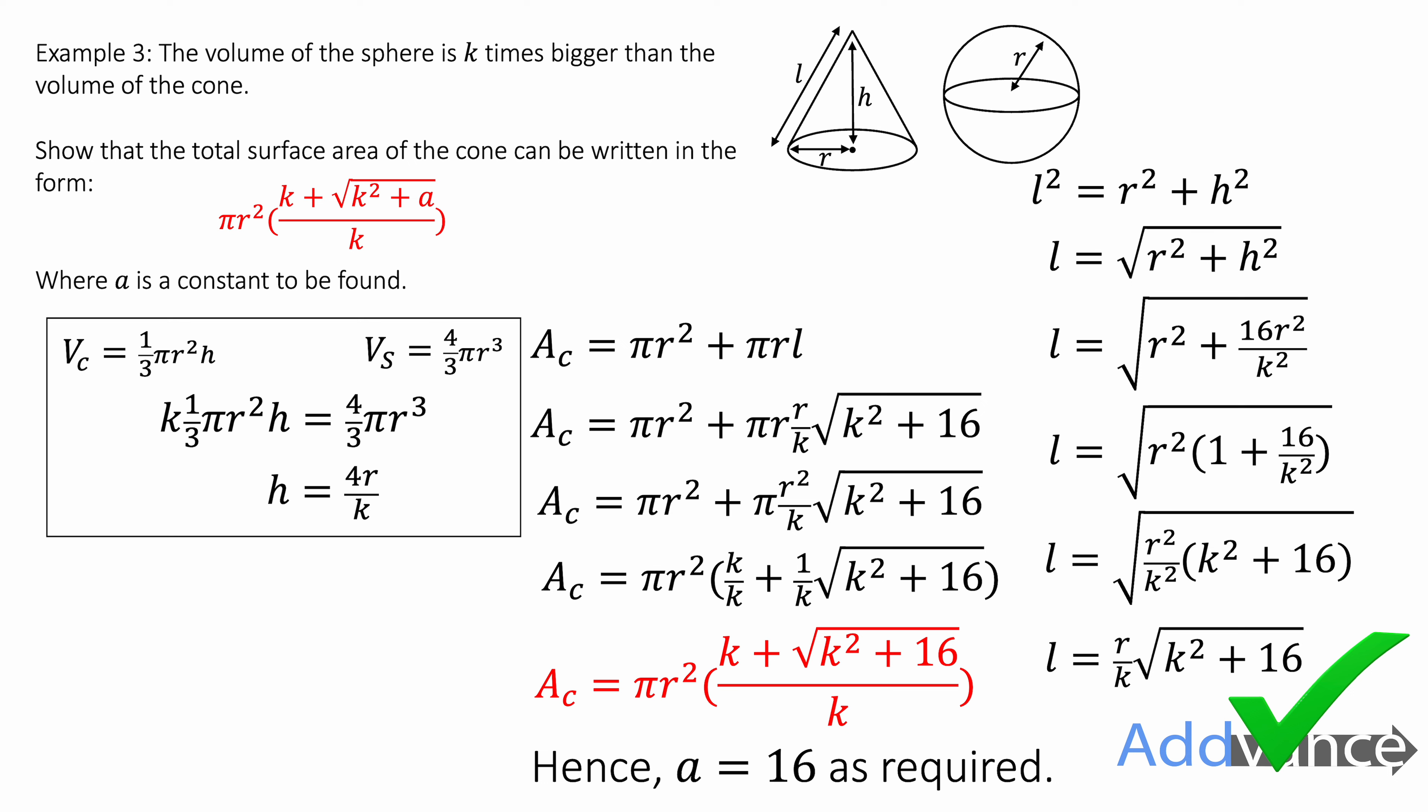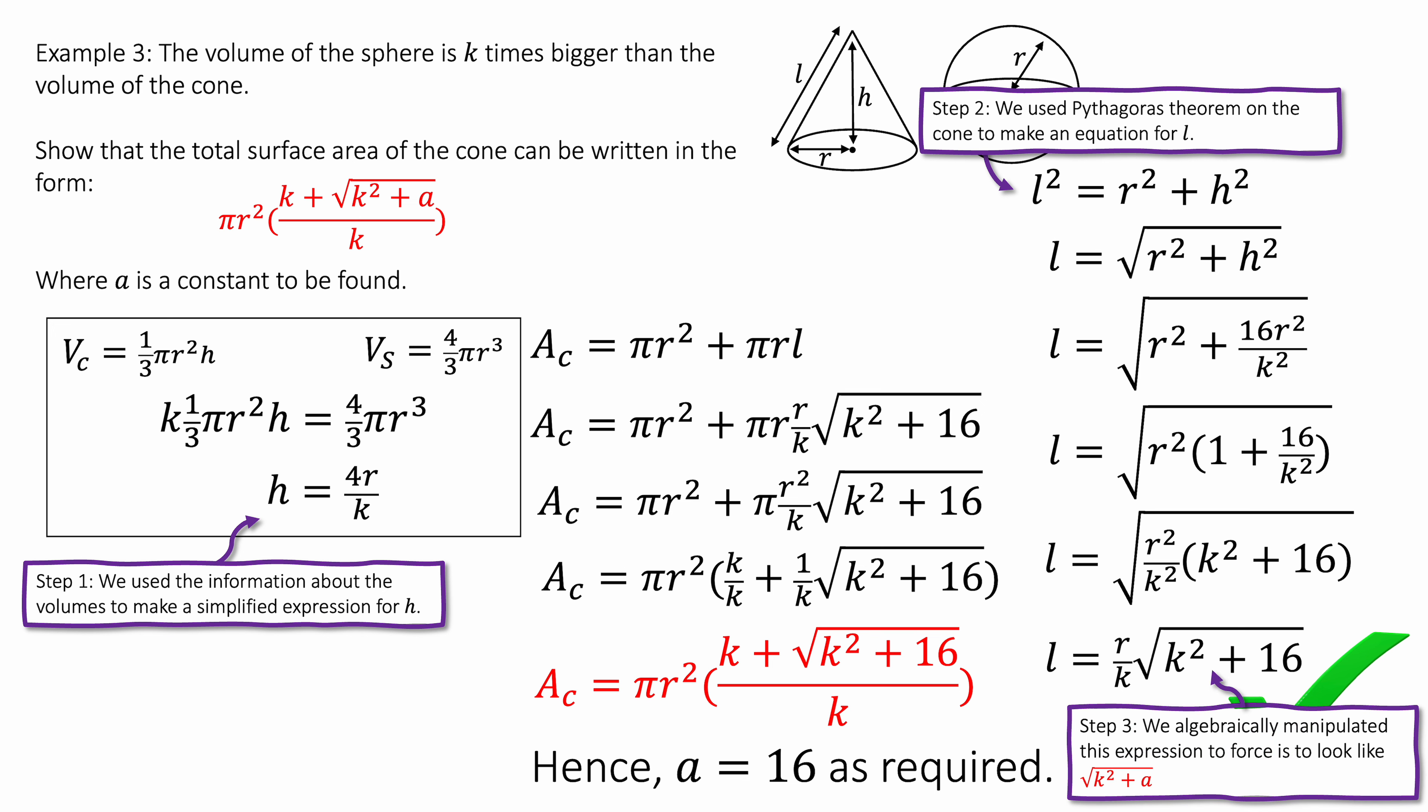Let's just reflect on that because that was very hard algebra. Step one, we use the information about the volumes to find a simplified expression for h. And we did that because we wanted to replace the h's in the surface area equation in the end. And step two, we used Pythagoras theorem on the cone to make an equation for l. And we did a lot of simplifying to force it to look like something where it's square root of k squared plus a. Because I just knew the square root would be that square root part in the surface area equation. It just felt right. So I wanted to force it to be k squared plus something. And that's what the algebra manipulation is there.